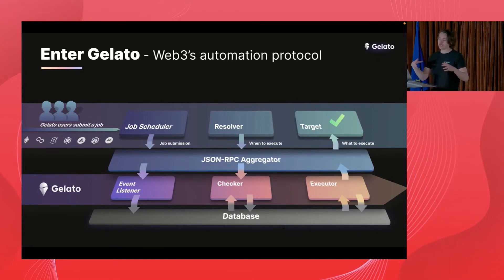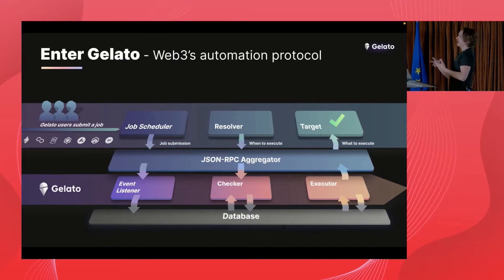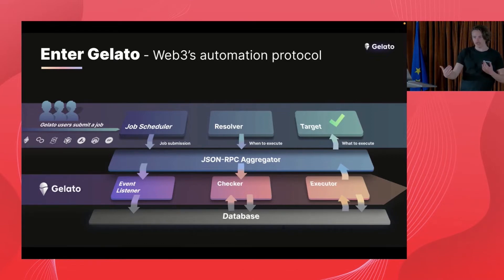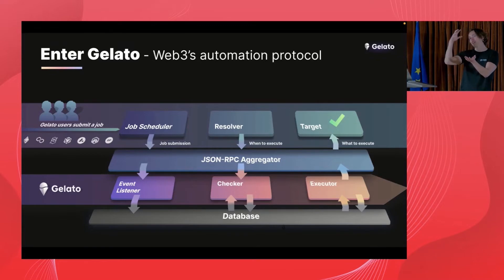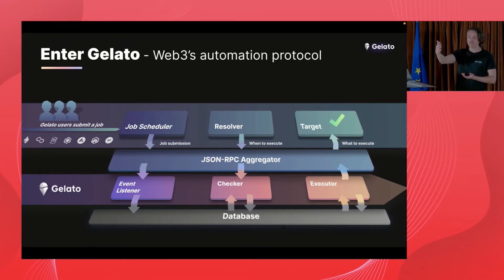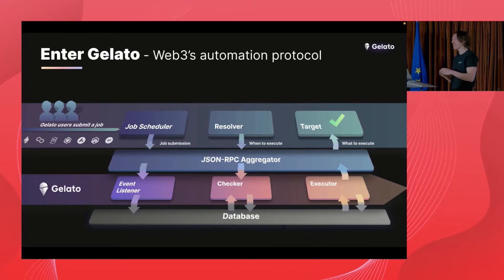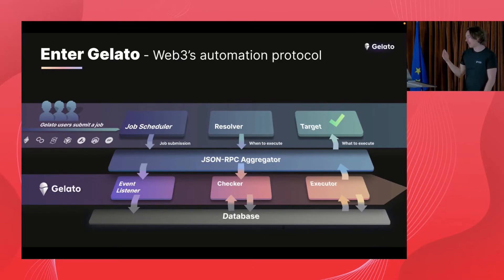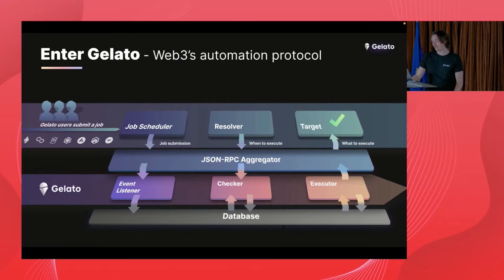On the back-end side, these are the clients that Gelato executors run — they accept your tasks and execute them. They consist of an event listener, which is the entry point where new tasks come in. Then there's the checker, which constantly checks whether the task Gelato was given can be executed — for example, 'Is the price on Trader Joe at the level the developer defined? Can I execute it now?' If it can't execute, it won't. If it can, it will. Then the execution engine makes sure transactions get mined reliably — which is harder than it sounds when you're executing tens of thousands of transactions every day, especially during high congestion.